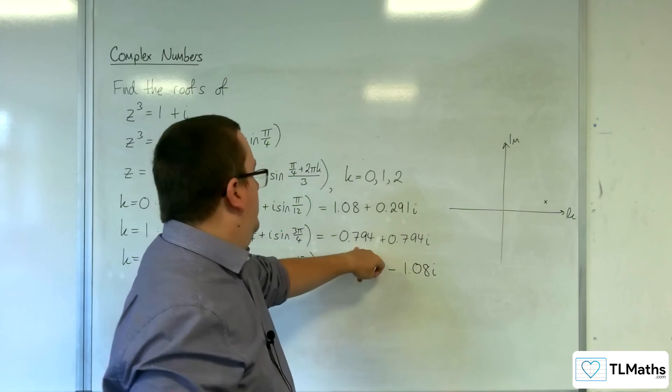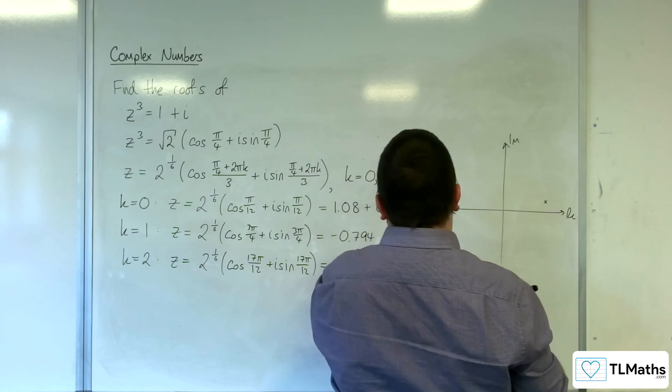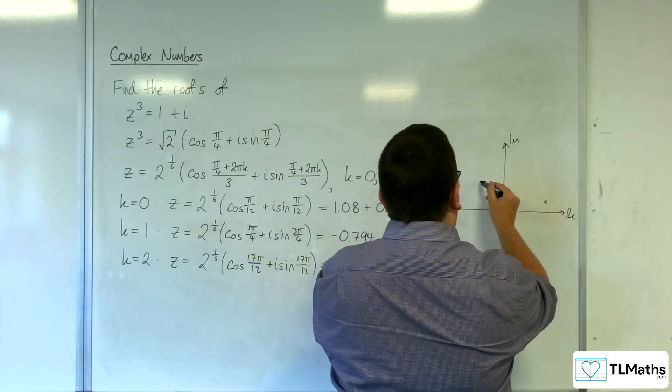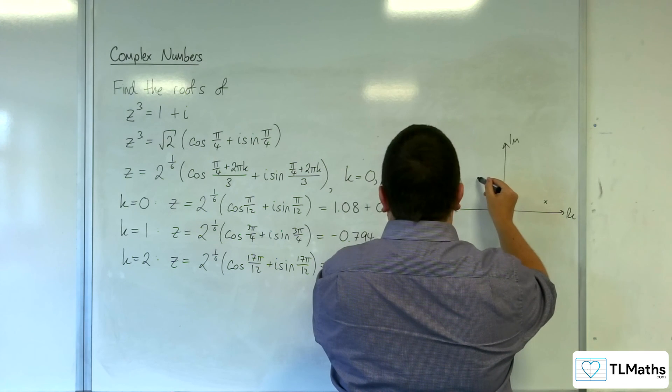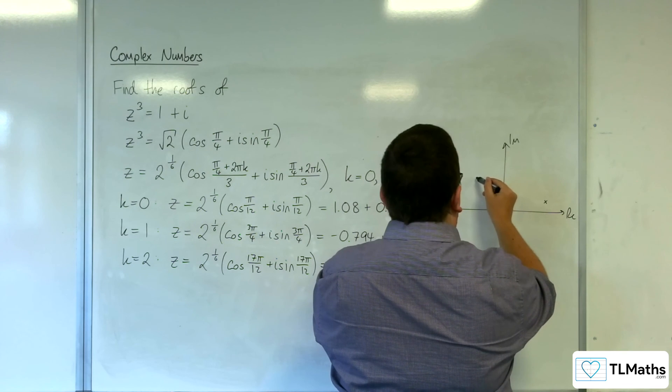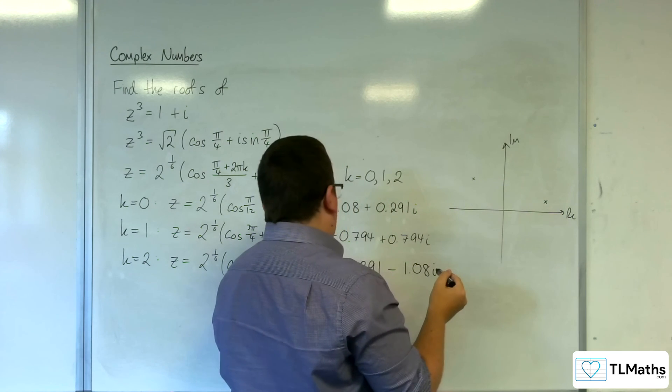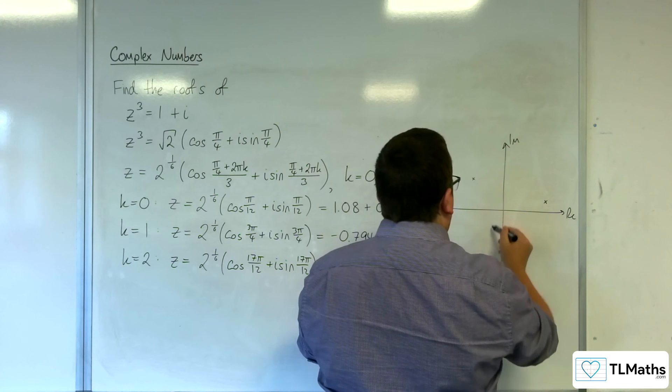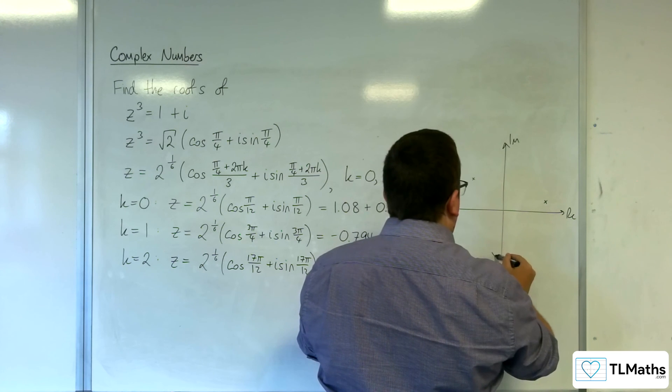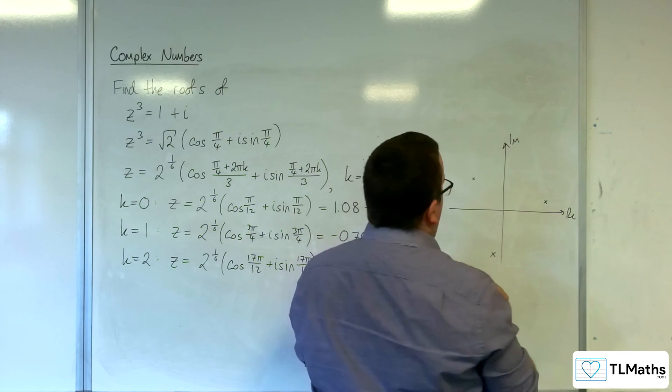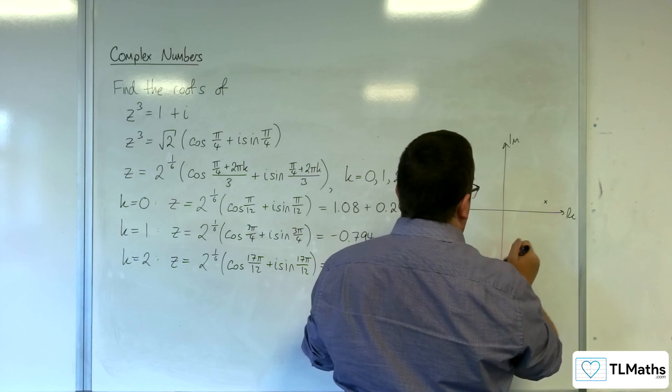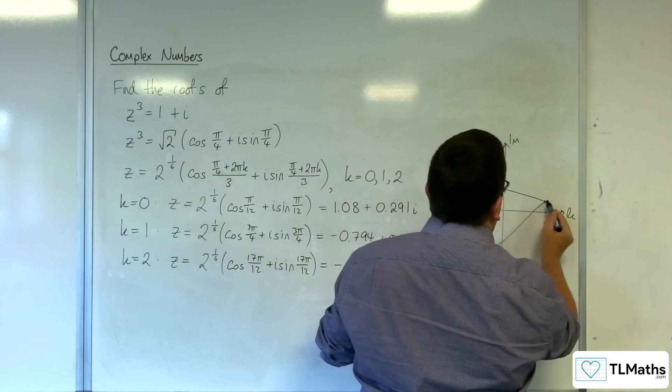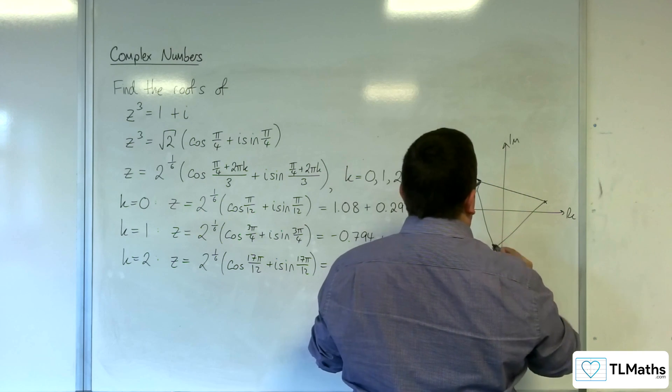Then minus 0.794 plus 0.794i, so something like this maybe. And then minus 0.291 take away 1.08, so something like this. Maybe a little bit further up.